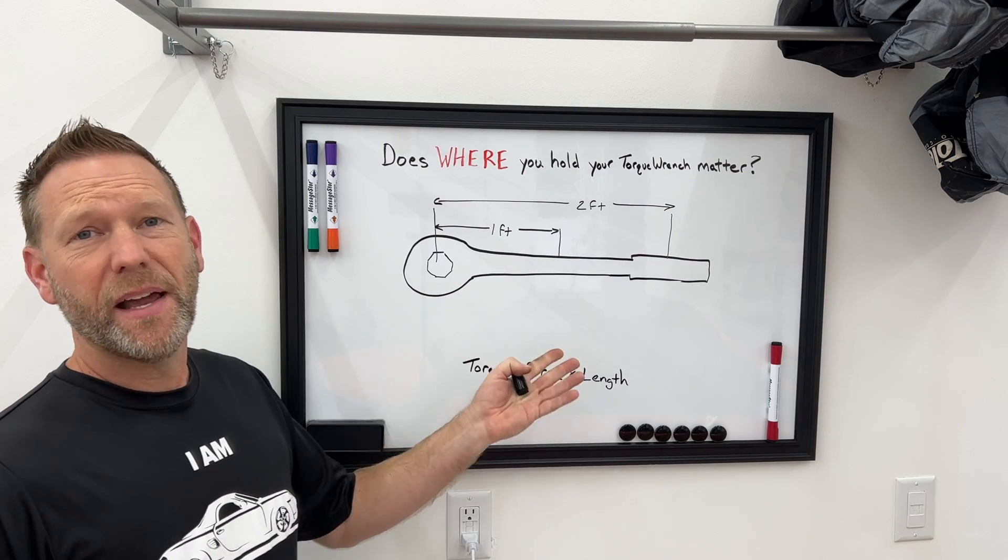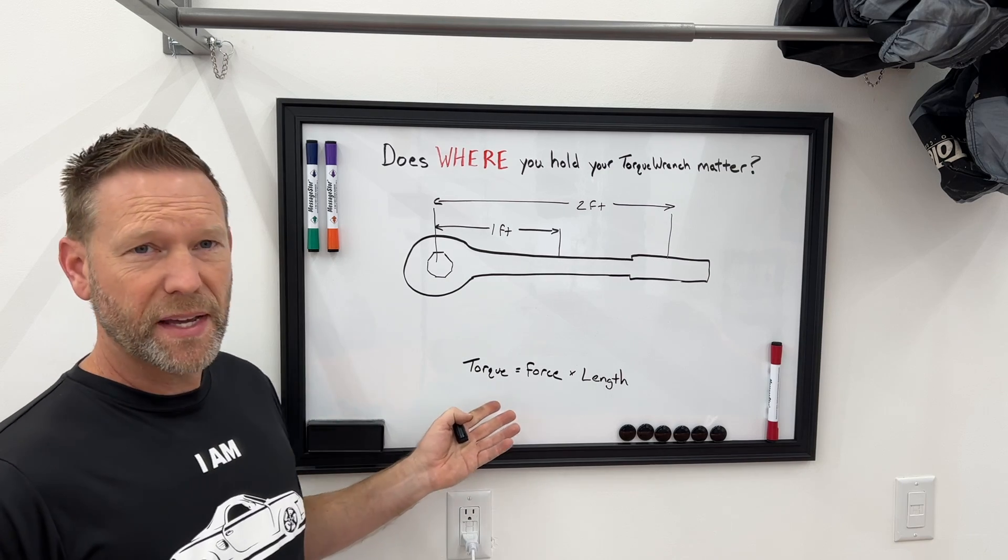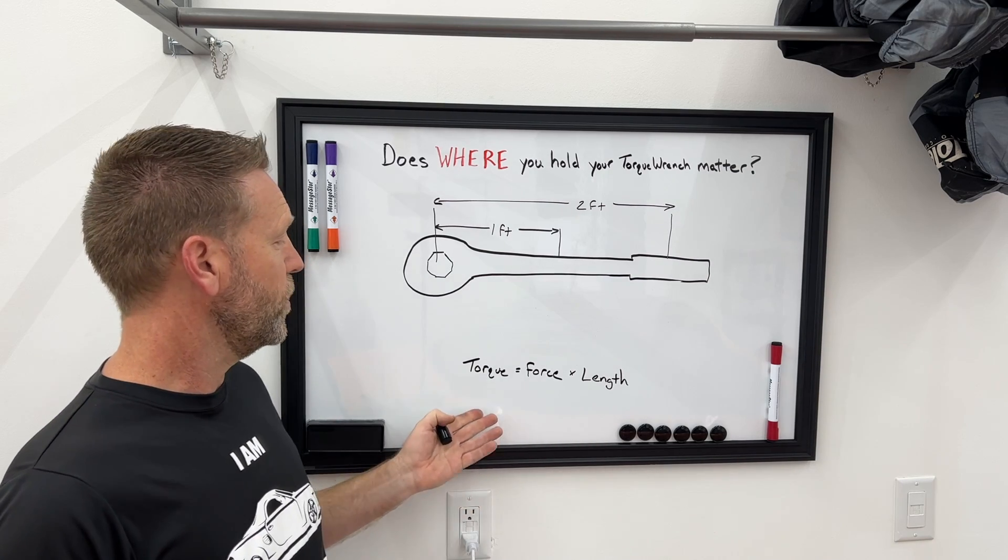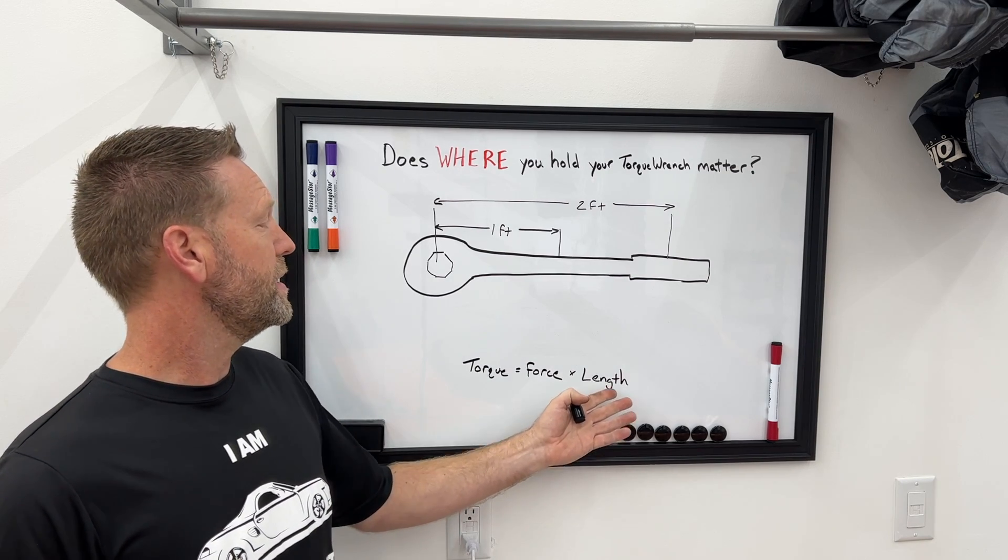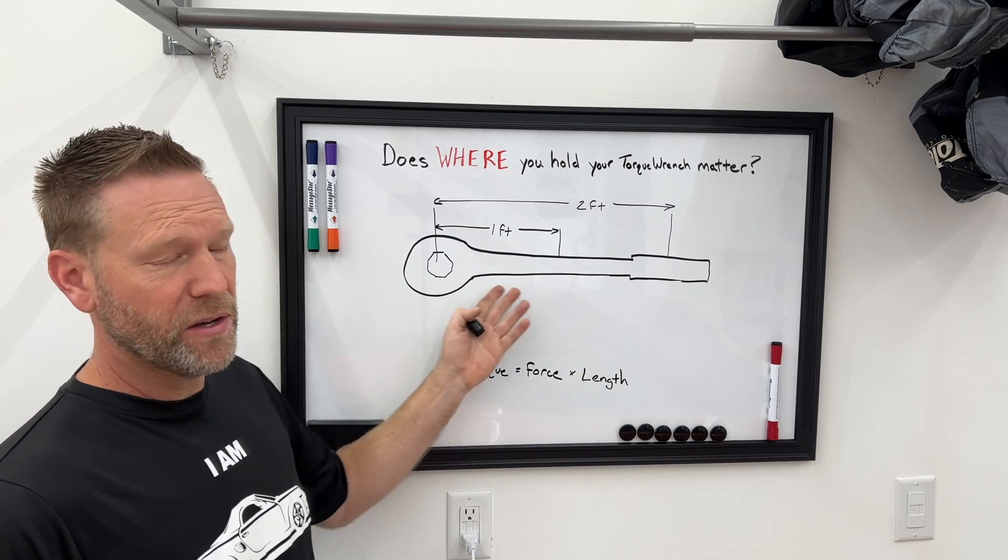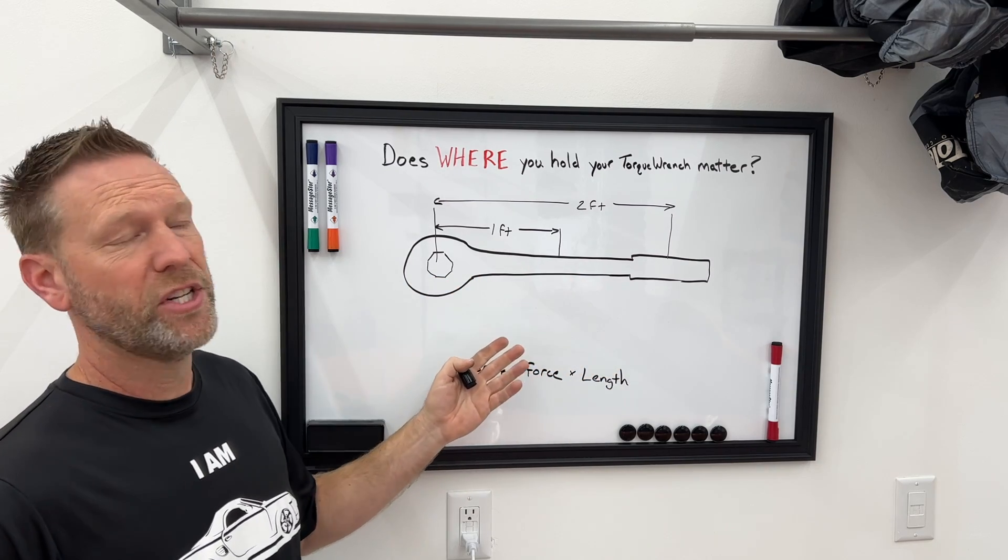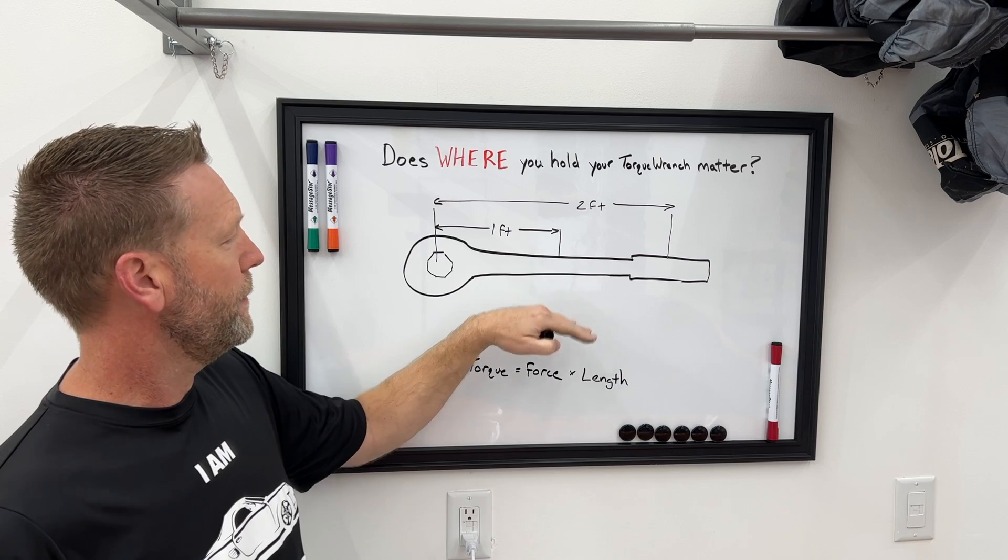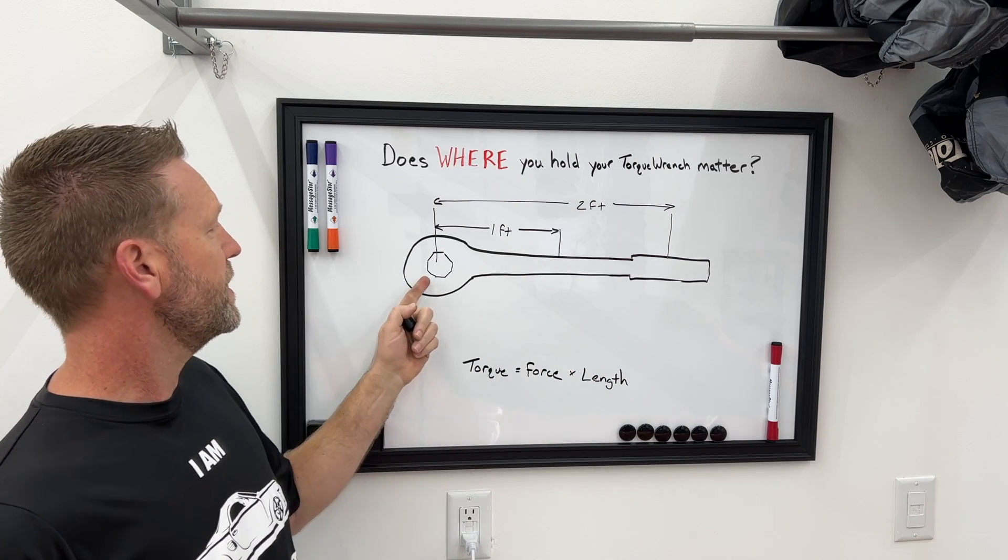This is the diagram that I kept seeing everywhere, which was what I was thinking that torque equals force times the length. So yes, based on where you grab a torque wrench, a different amount of force is required to get the same torque.